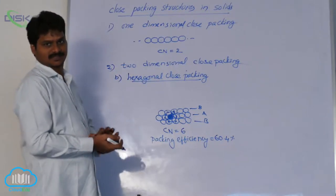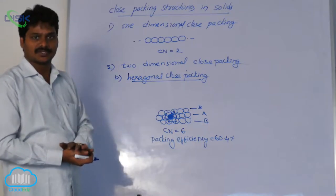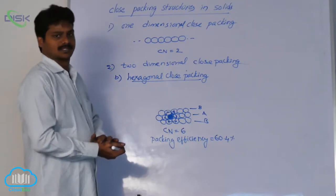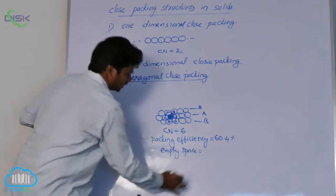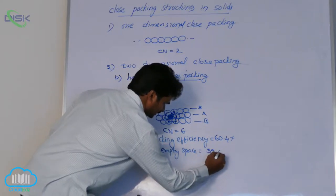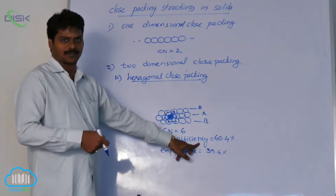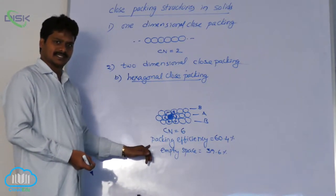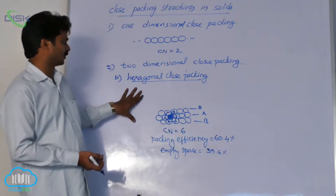Hexagonal close packing is a more stable structure than square close packing because the occupied area is more. In different possible structures, the structure in which the occupied space is more is considered to be more stable. Empty space in hexagonal close packing is 100 minus 60.4, which equals 39.6%. Occupied volume is 60.4% compared to only 52.4% in square close packing.